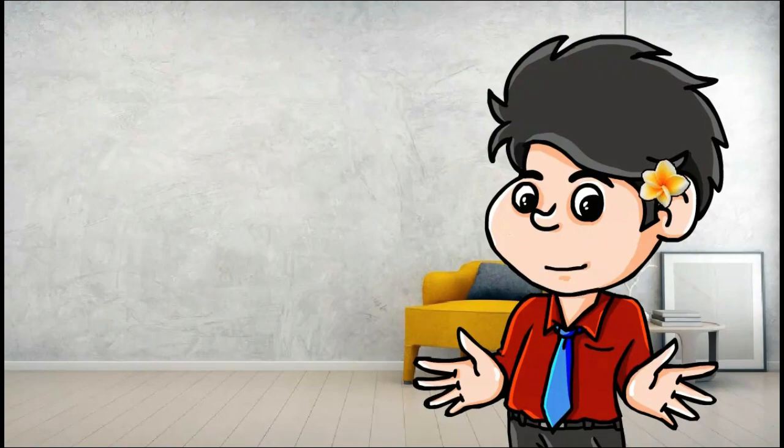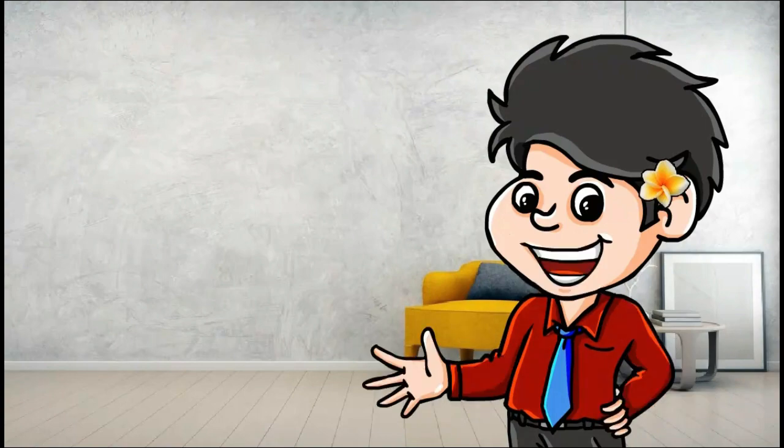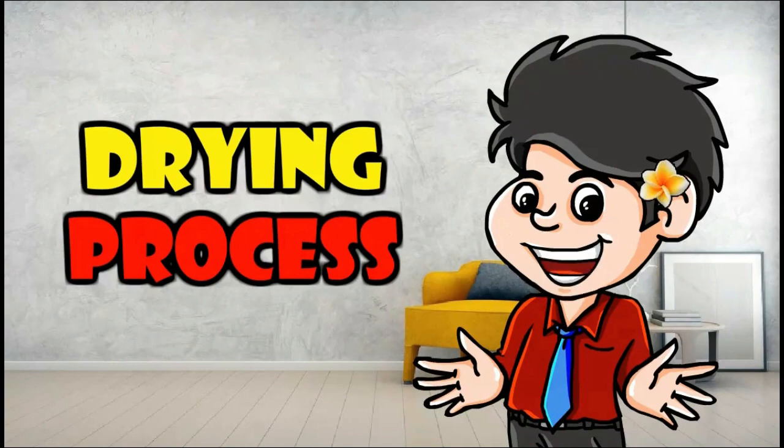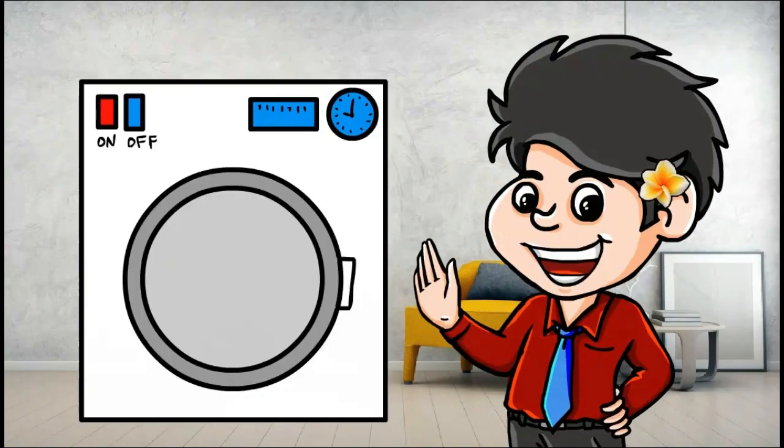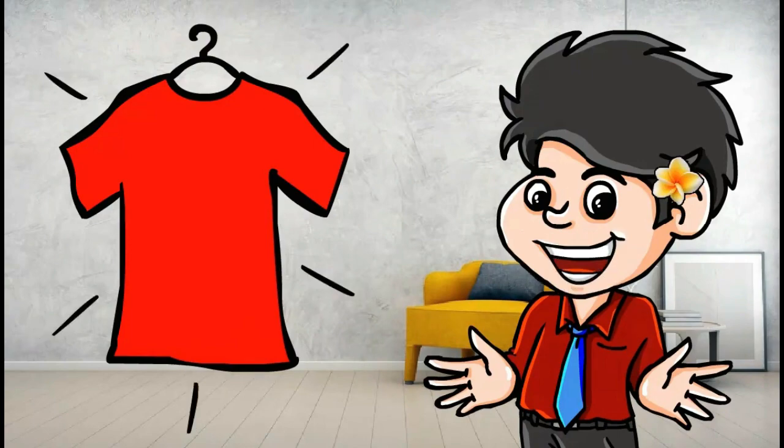langkah selanjutnya adalah proses pengeringan pakaian atau drying laundry process. Biasanya proses pengeringan ini disarankan menggunakan mesin tumbler dryer. Setelah pakaian kering, apa yang selanjutnya kita lakukan?